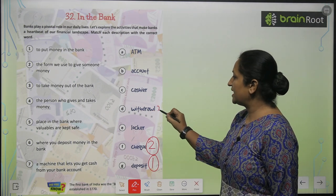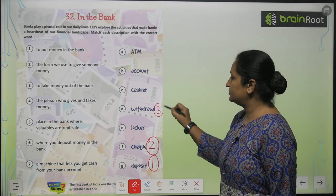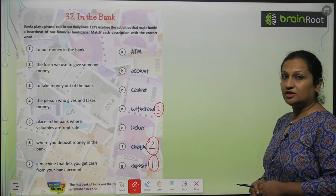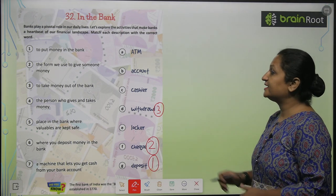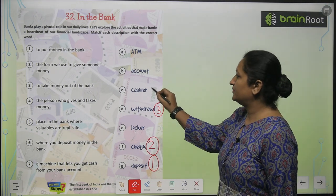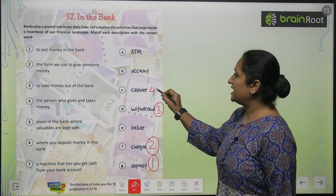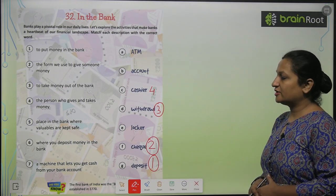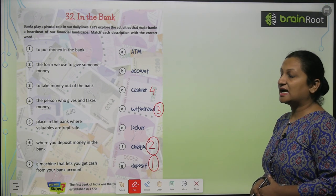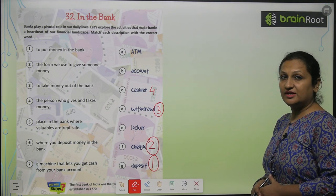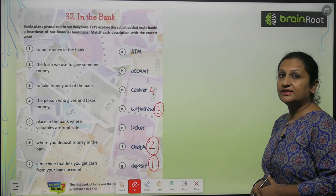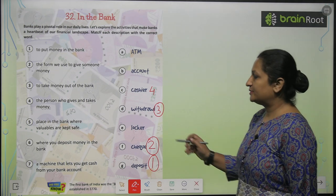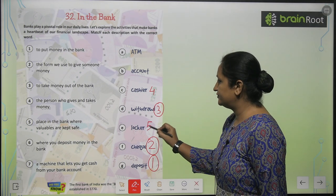The person who gives and takes money - usse hum bolte hai cashier. You will write four here. The place in the bank where valuables are kept safe - toh yeh rakhe jate hai locker mein safe. You will write five here.